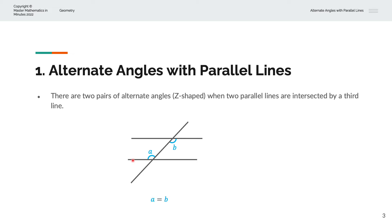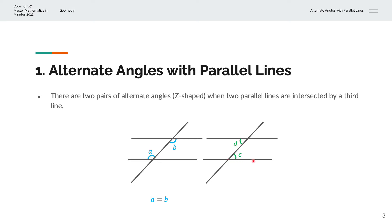The second pair is where we can label this angle as C, and the alternate angle is here — we can label that as D. Again, that is a horizontal line, then a vertical line, and the horizontal line again, making up the Z-shape. And so, C is equal to D.